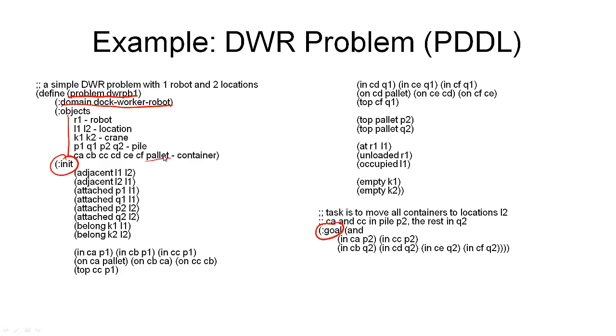Then the initial state contains the ground atoms that relate these objects to each other. So that's what we've got here. We start off with the static relations. These are the things that describe the topology. And won't change from state to state. So there's the adjacency between the two locations. There is where the different piles are. Piles one, P1 and Q1 are at location one, P2, Q2 at location two. And where the different cranes are, one crane at each location.